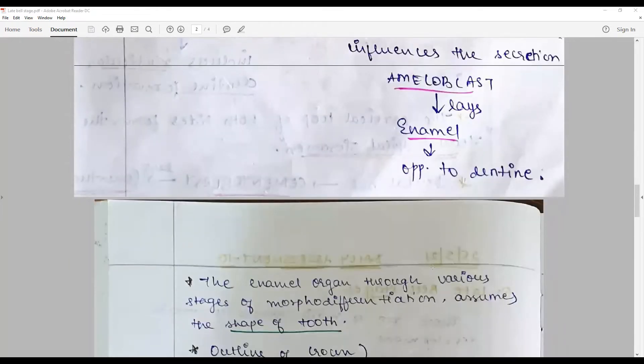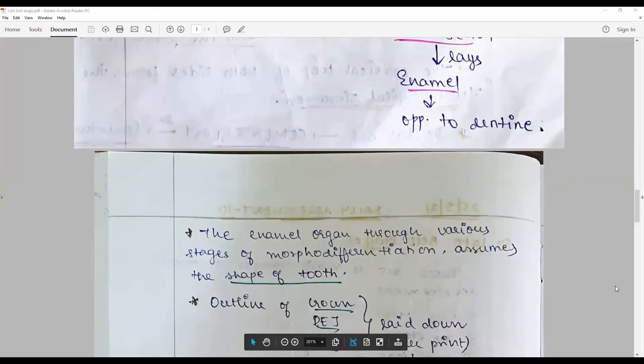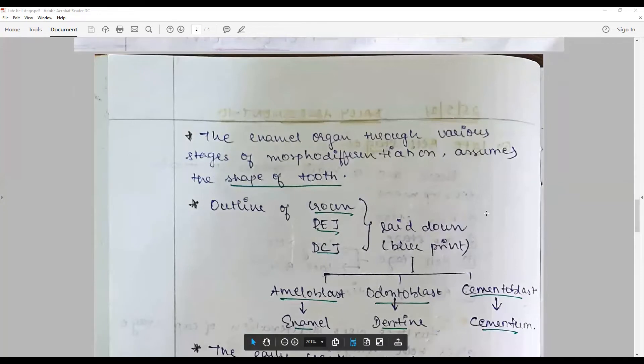So the enamel organ through various stages of morpho-differentiation determines the shape of tooth. There are a lot of genes like fibroblast growth factor, bone morphogenetic proteins, hedgehog genes, wnt genes that contribute to this formation. The outline of the crown, the DEJ and the dentino-cemental junction laid down, and this is what we call it as technically the blueprint of the tooth. And the ameloblast lays down the enamel, odontoblast lays down the dentine, and cementoblast lays down the cementum. Together all this process happens in the late bell stage.